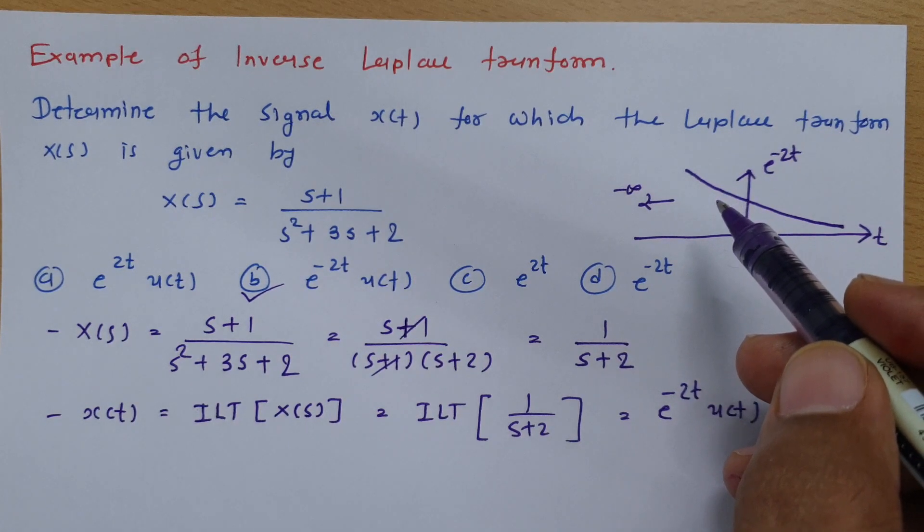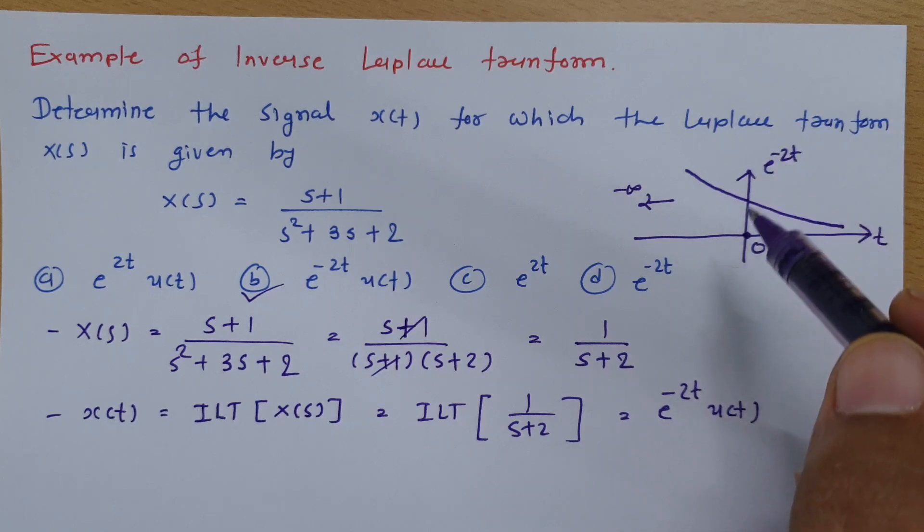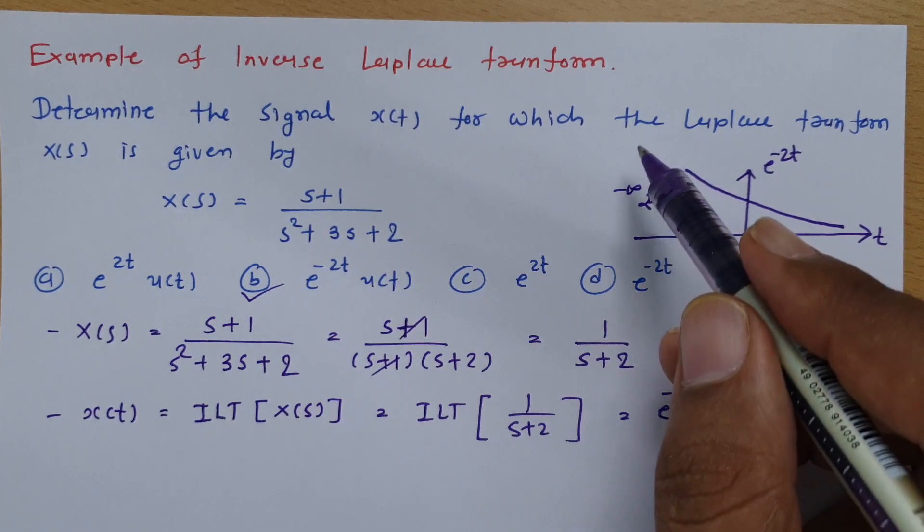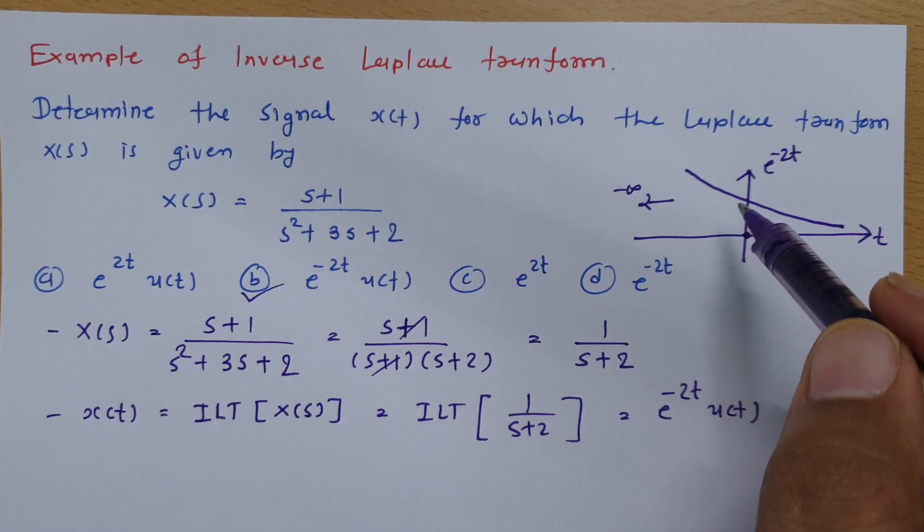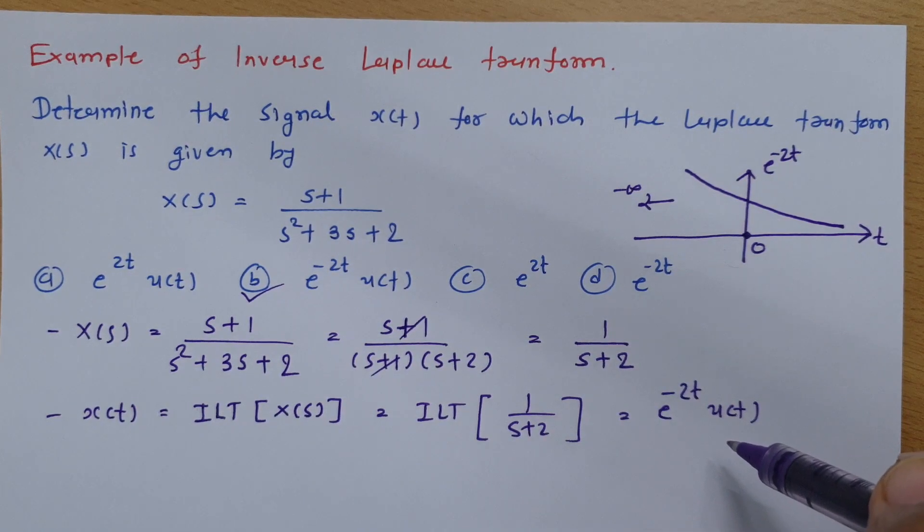So there are 3 Dirichlet conditions that I have explained. So if this amplitude is going towards infinity it will violate Dirichlet's condition which will not allow us to have Laplace convergence.